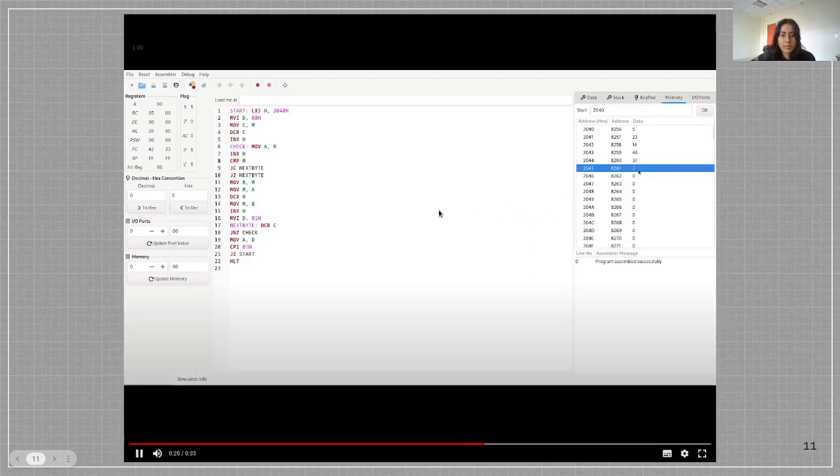Now we will execute the program. Now we will execute the program and this list will be sorted. So we will get 7, 14, 23, 37, and 46 as you can see.